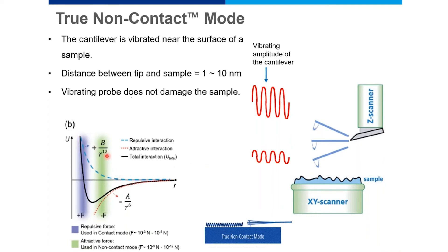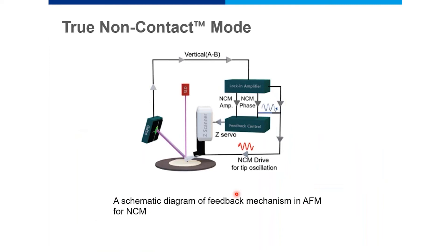In non-contact mode, the cantilever operates in the long-range attractive force regime. The cantilever is just a couple of nanometers above the sample surface and tracks that surface. Depending on the change in amplitude, an image of the sample surface is generated. Whenever there is a change of amplitude, the feedback mechanism tells the Z-scanner to move slightly up or slightly down to maintain the set-point amplitude given to the cantilever.